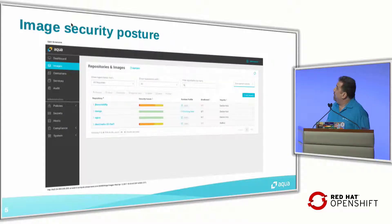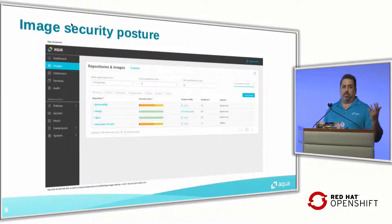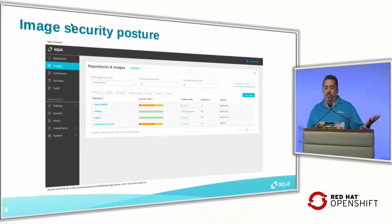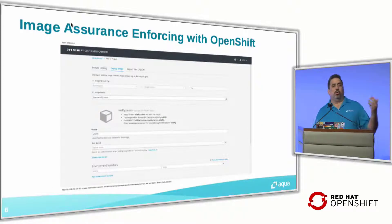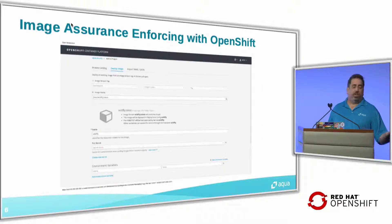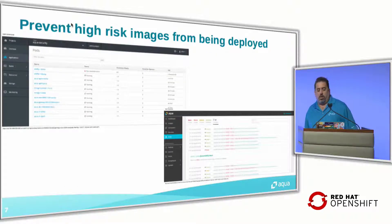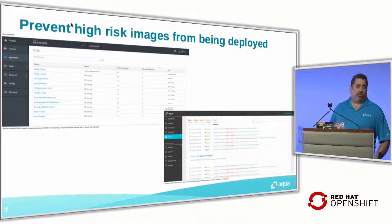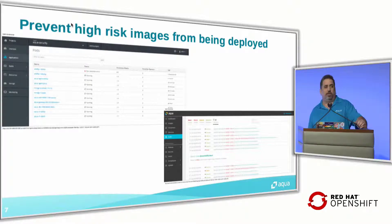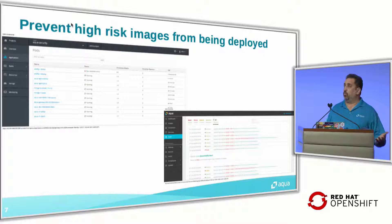You can understand what your posture is for any given image — what vulnerabilities you have, what components are in every image. You can define whether you want to deploy the image or block the deployment. When you try to deploy an image, Aqua will be able to stop that and give you a notification, so no poisonous image or non-compliant image can be deployed.